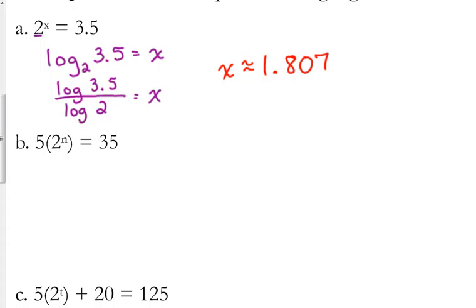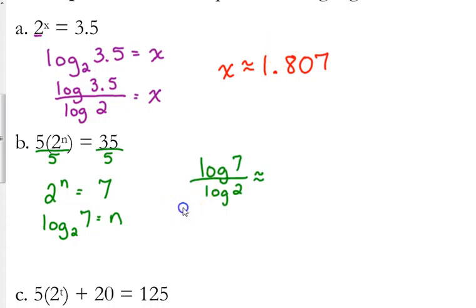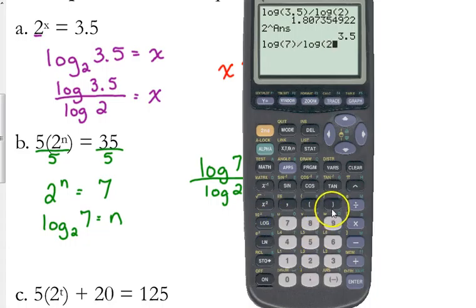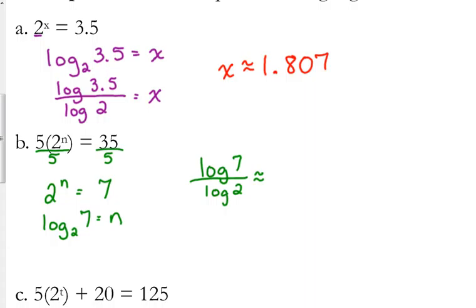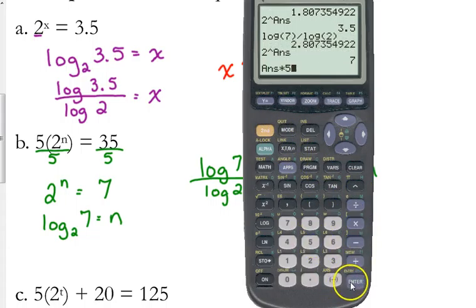Example B. This exponential is not isolated. It's being multiplied by 5. So that's our first step. We need to get rid of that 5. It's being multiplied, so we divide both sides by 5. 35 divided by 5 is 7. Let's write this in log form. 2 to the n is equal to 7 is equivalent to the log base 2 of 7 is equal to n. To evaluate that, that's the log of 7 divided by the log of 2, which is approximately 2.807. You can check it. Raise 2 to that power and then multiply it by 5 and you get 35.